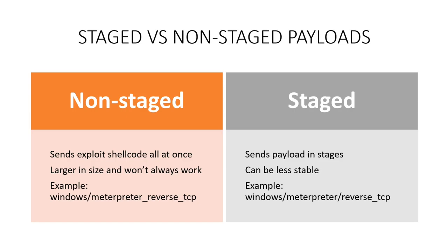You might see a Windows type payload or a Linux type payload, or as you see on the screen, a Meterpreter type payload. There's Python, there's all different types — there's like 500-something that we saw in Metasploit alone. These payloads are what we use to send to a victim and attempt to get a shell on the machine.